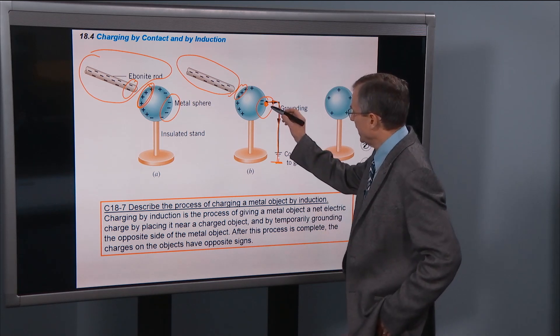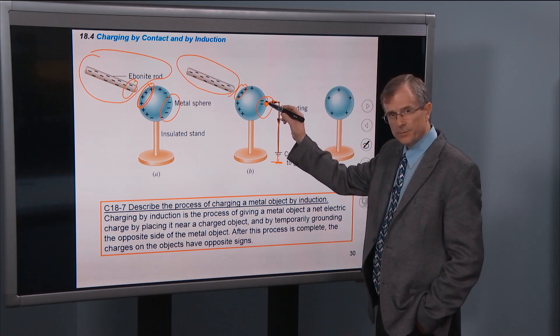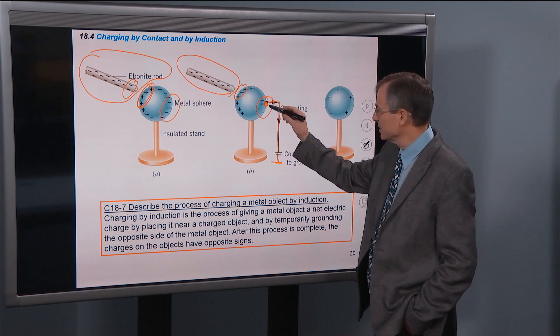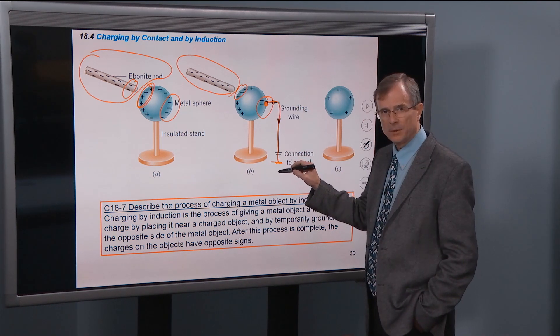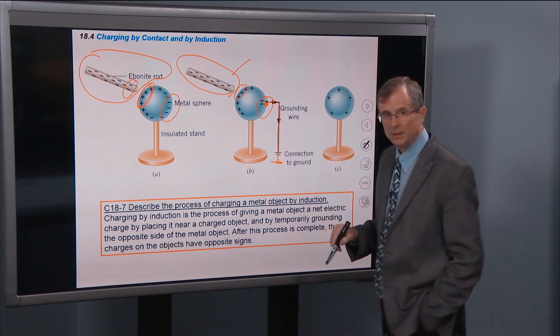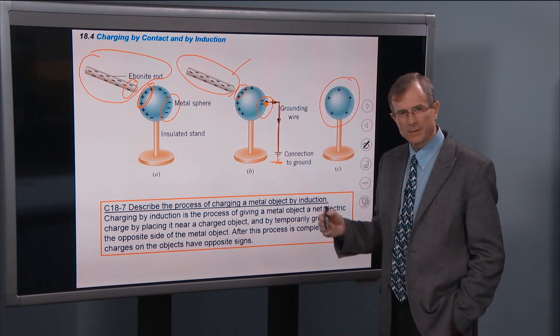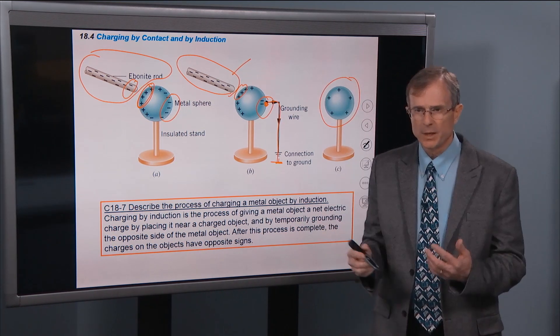And what that does is the earth is a huge object and it can absorb any extra charge that you have. And so that extra charge on this side gets absorbed, so the negative charges, the electrons that have accumulated on the far side, have then gone into the ground. And then you remove the charging rod and you're left with some positive charge. So you've lost some electrons and they spread out uniformly.